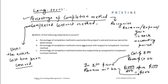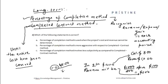However, in the completed contract method, in the first year my net income is equal to zero. Because the revenue of five hundred dollars does not cover the entire cost of eight hundred dollars, my profit is zero. Only when the revenue exceeds eight hundred dollars can we recognize the gains.